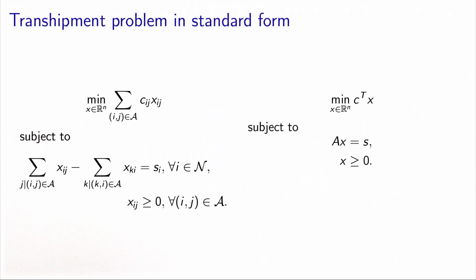We have seen that the transshipment problem can always be written in standard form, if needed by transforming the network. The matrix A, which is characterizing the problem, is called the incident matrix and has a special structure.